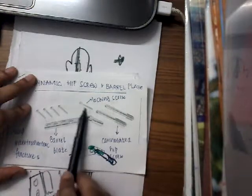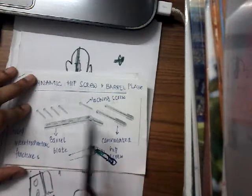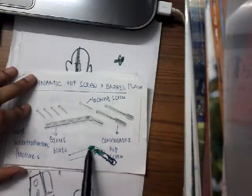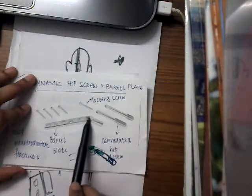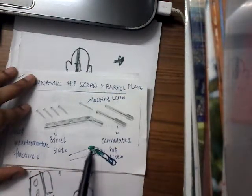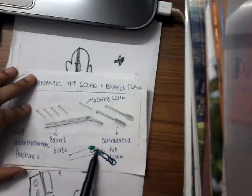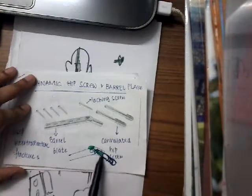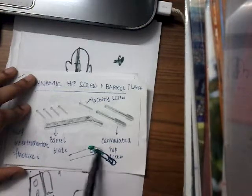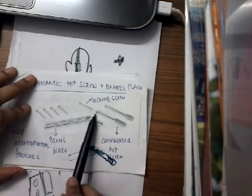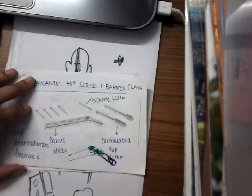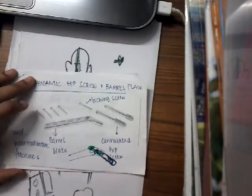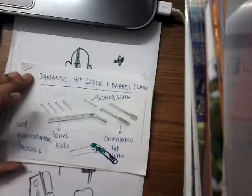Now, the locking screw is put from the barrel plate. This locking screw goes from the barrel plate and enters the canal of the cannulated hip screw, and it is fixed there.